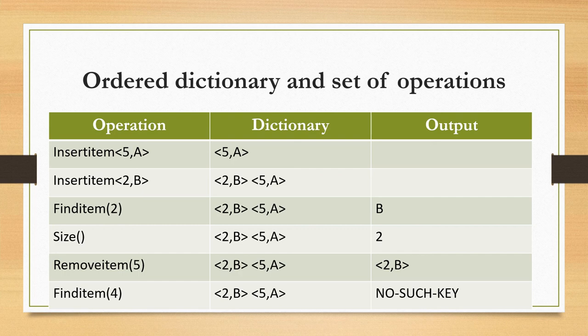As this is the ordered dictionary, 2 is lesser than 5, so it is placed first. Here 5 and 2 are the keys, and a and b are the elements. Next is find item of key 2 — since we inserted (2, b), the output will be b.